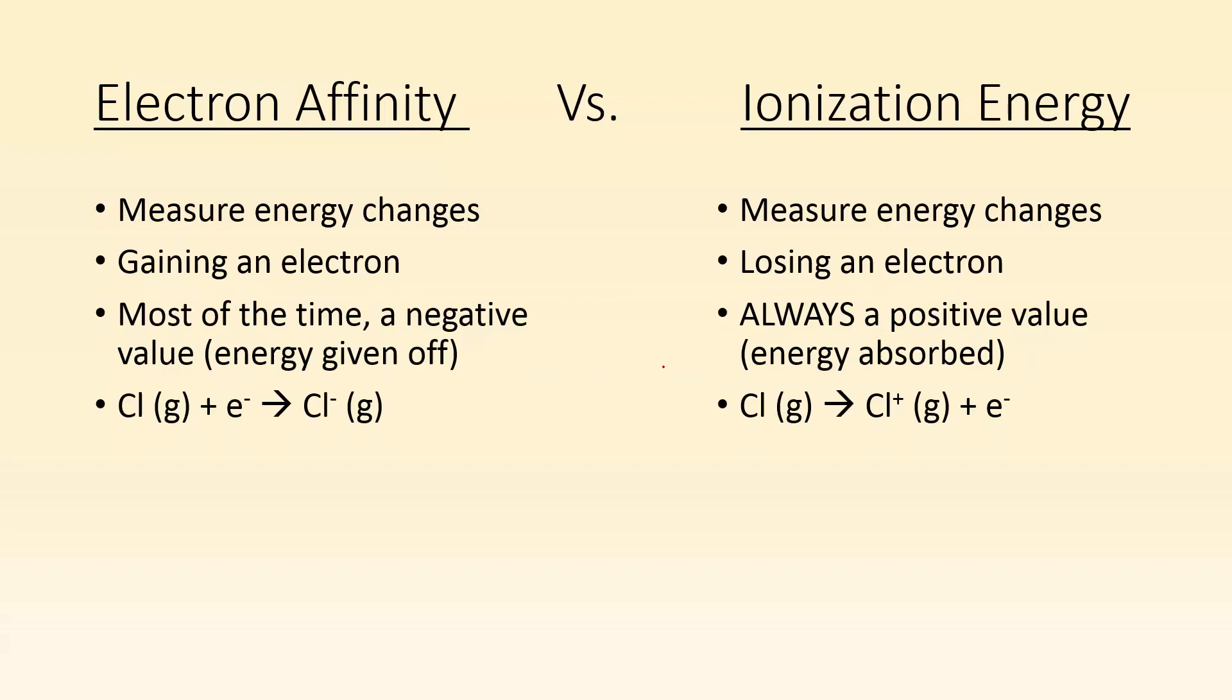This would be a good time to take a second and compare electron affinity to ionization energy, because these two things are usually taught around the same time. Both are measuring changes in energy. But the difference is electron affinity is gaining an electron, whereas ionization energy is losing an electron. Most of the time for electron affinity, it's a negative value and energy is being given off. For ionization energy, it's always a positive value because you're ripping an electron away from an atom that it's attracted to. If the electron is on the reactant side, it's affinity. If it's on the product side, it's ionization energy.